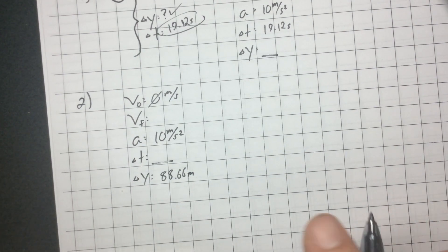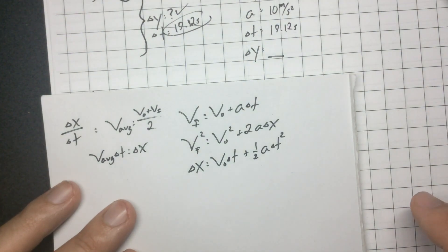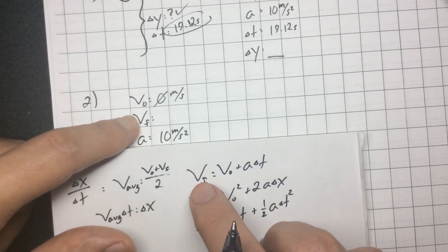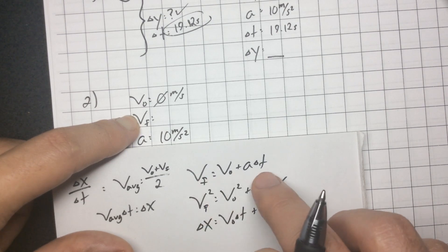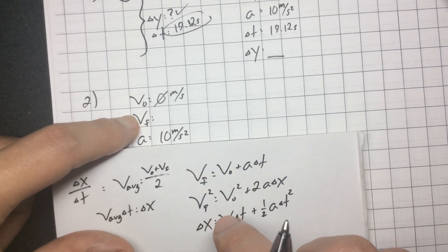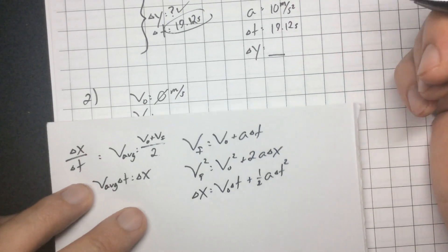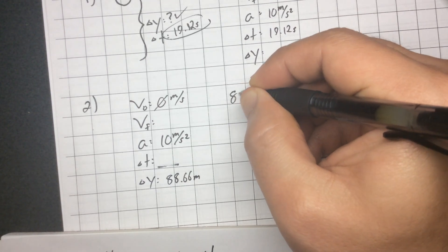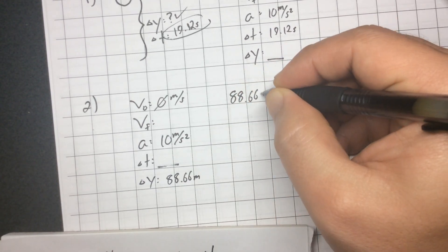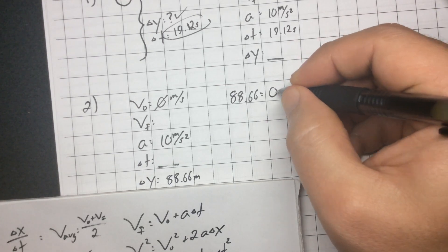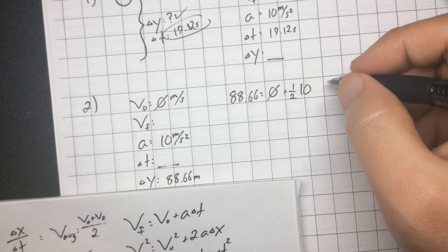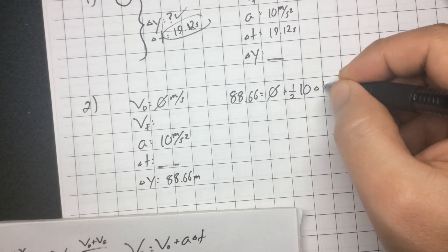I'm looking for time. There are two equations that have time in it: the first equation and the third. But I also notice I don't have the final velocity, so I can't use the first equation to find time — that would be two unknowns. So I'm switching to the third equation. Change in position — 88.66 — equals initial velocity, which is zero, so that all goes away, plus one-half times a (10) times t squared.